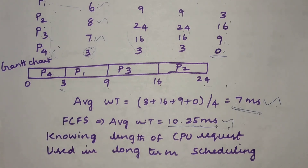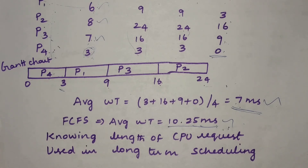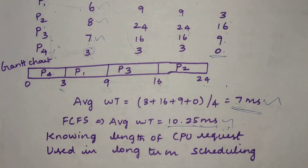To estimate burst times, we can use exponential averaging. This approach uses the execution history of previously completed processes of the same type to predict the burst time of an incoming process. We have methodologies to find the burst time of incoming processes this way, and we will discuss those in detail.